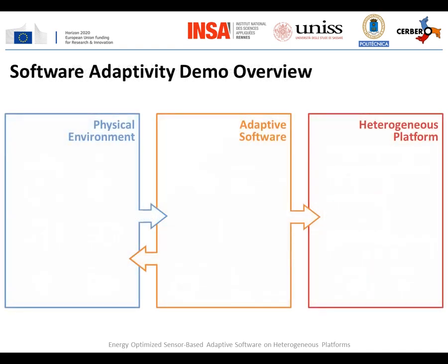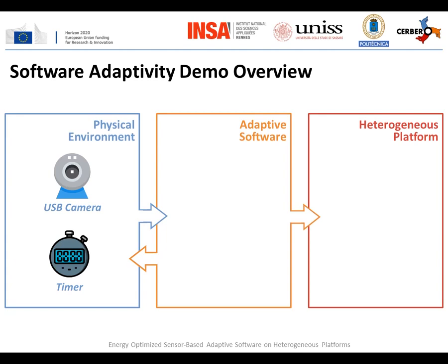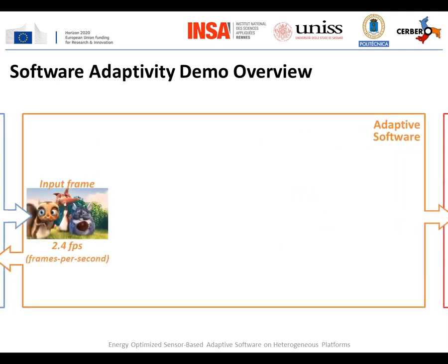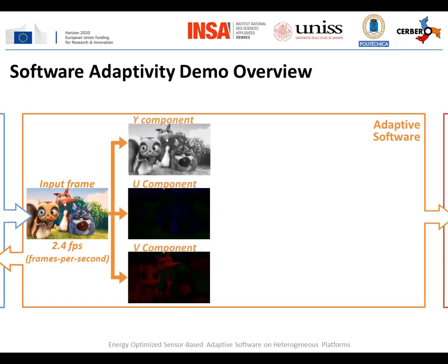The following demonstration presents a toolchain providing both design and runtime support for adaptive software systems. The sensors used are a USB camera and a timer embedded on the heterogeneous platform. The camera is both the sensor providing data to the software and the sensor triggering the reconfigurations. The adaptive software is an image processing algorithm: the input image from the USB camera, at a rate of 2.4 images per second, is first split into its luminance component Y and its two chrominance components U and V. The algorithm then computes the standard deviation of each component and compares it to a threshold.